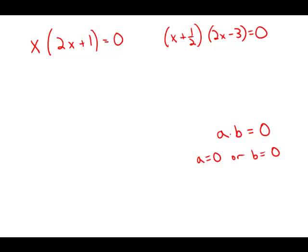Looking at the first equation, the only way to get a product of 0 is if either x equals 0, or 2x plus 1 equals 0. Solving that gives x equals negative 1 half. So x equals 0 or x equals negative 1 half — those are the only two mathematical possibilities with the first equation.